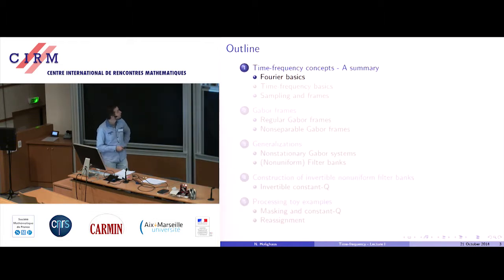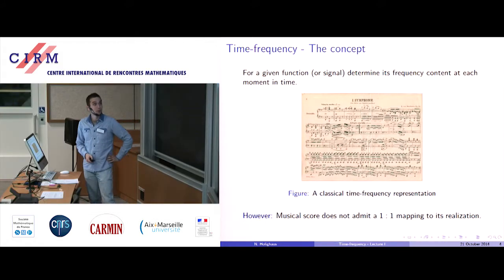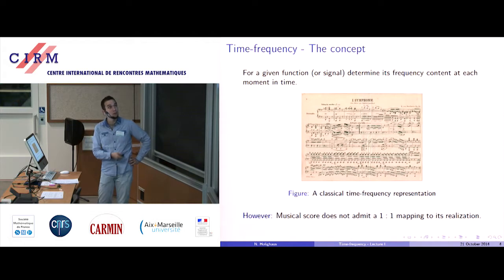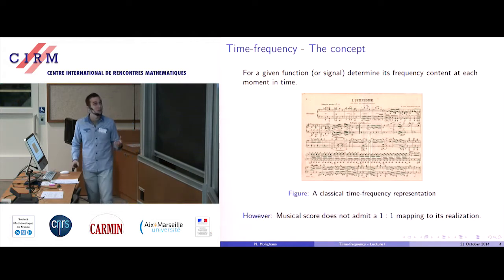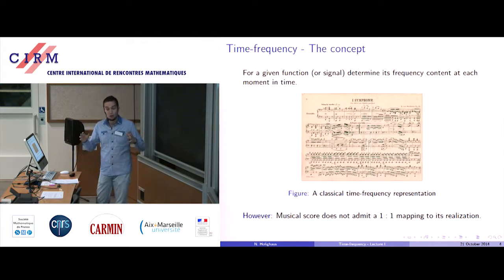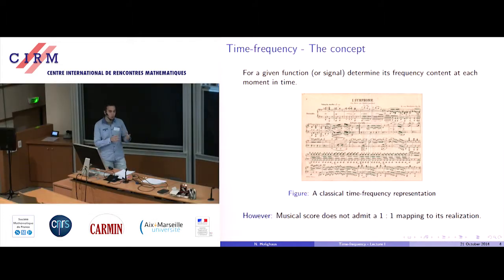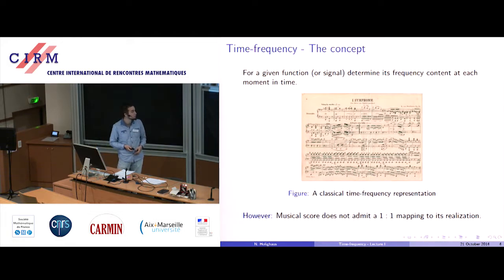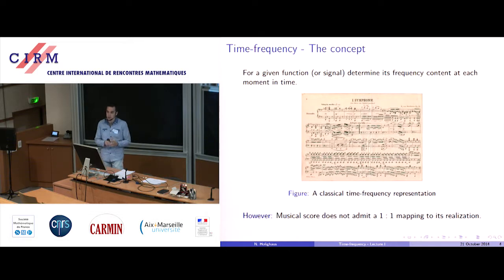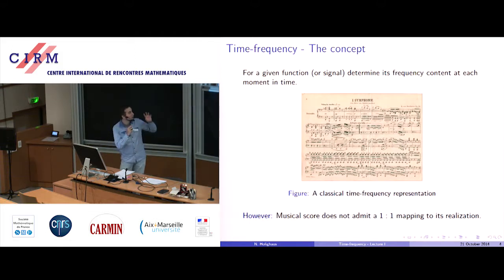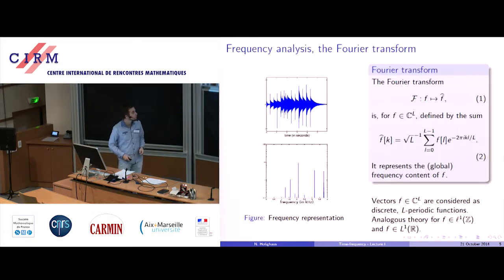I'll start with the Fourier basics, preceded by what is the concept of time-frequency. We want something actually rather close to musical notation if we imagine a sound signal. We want to determine from a signal the local energy in certain spots in time and frequency. That's quite close to classical musical notation, but also quite different because musical notation is just a conceptual thing. If we have an actual physical signal, there are effects that prevent us from getting such a precise, perfect representation — namely uncertainty effects and things like that.